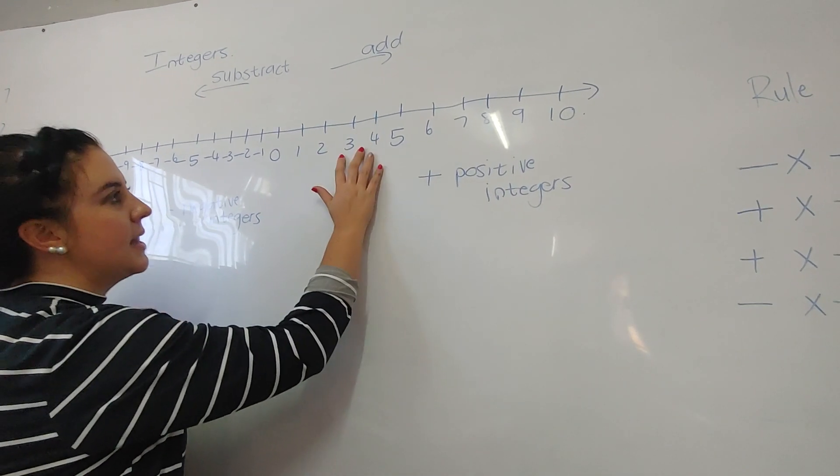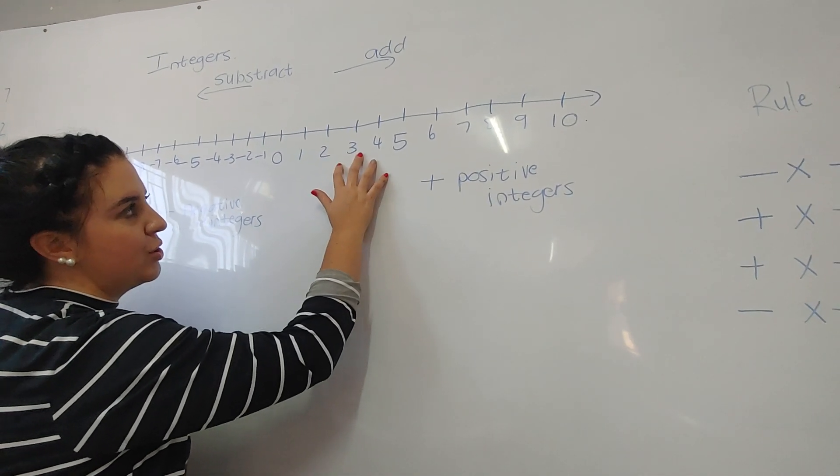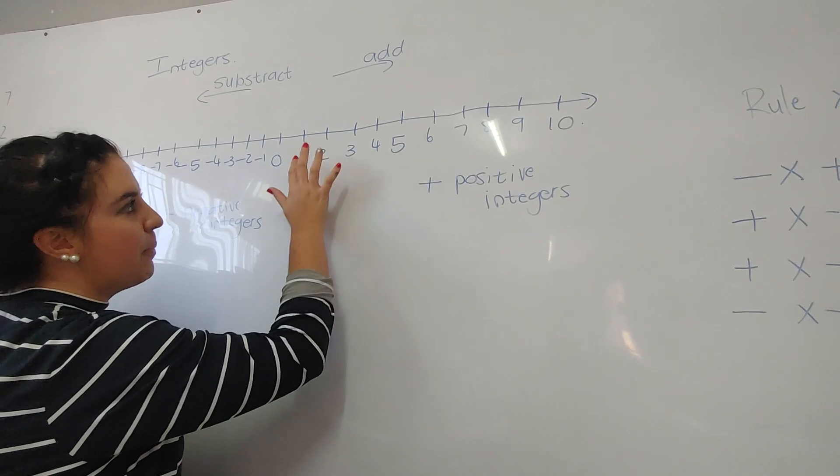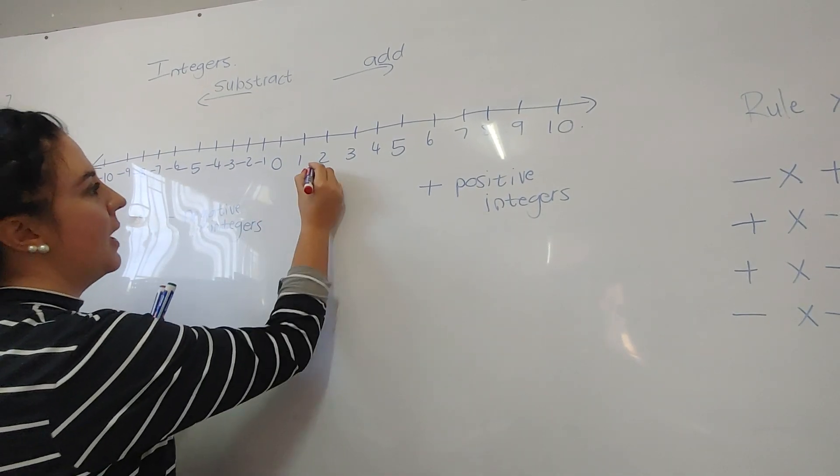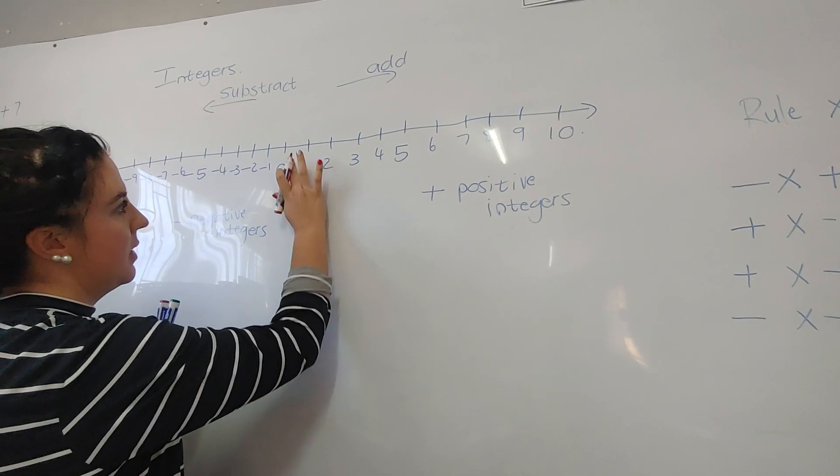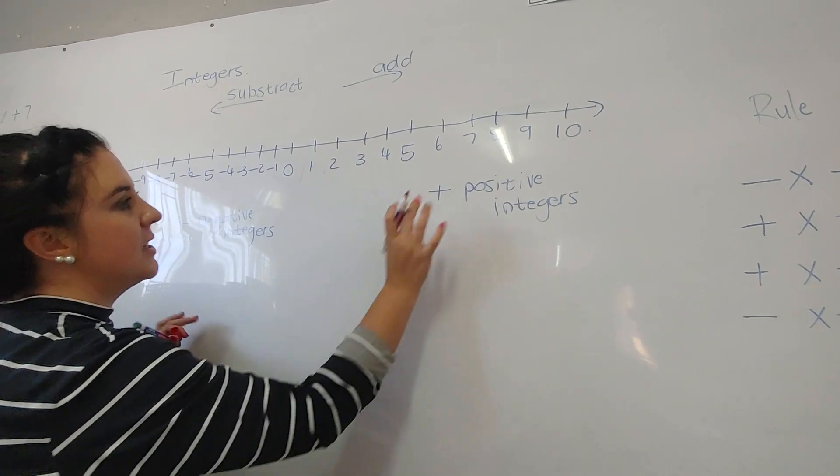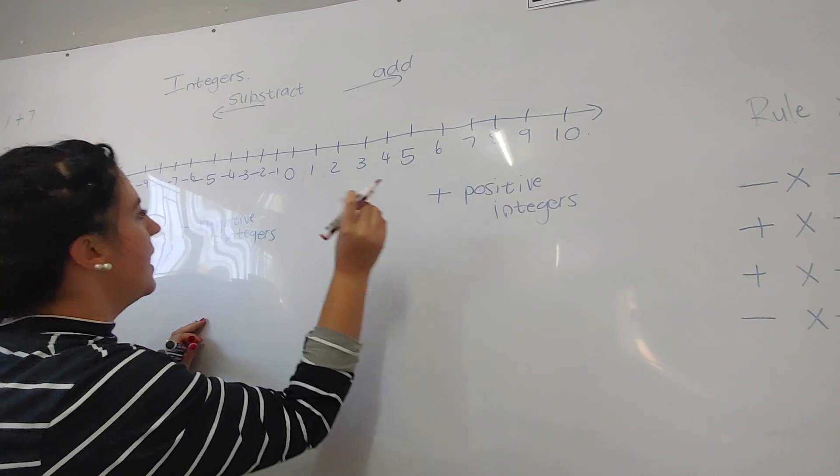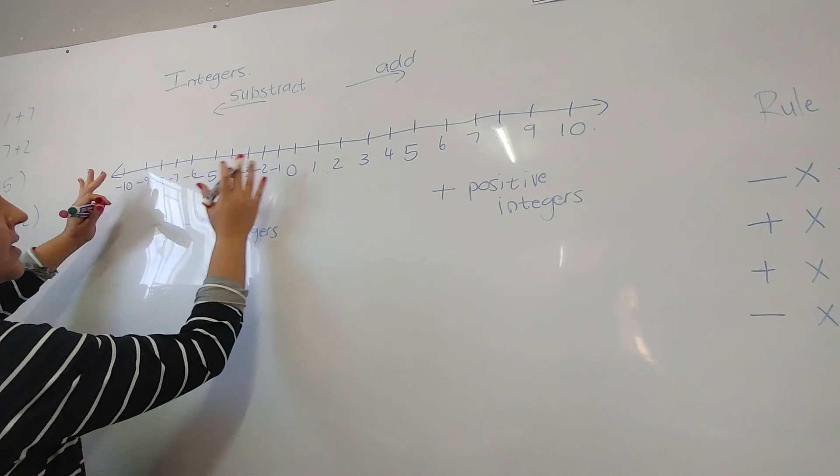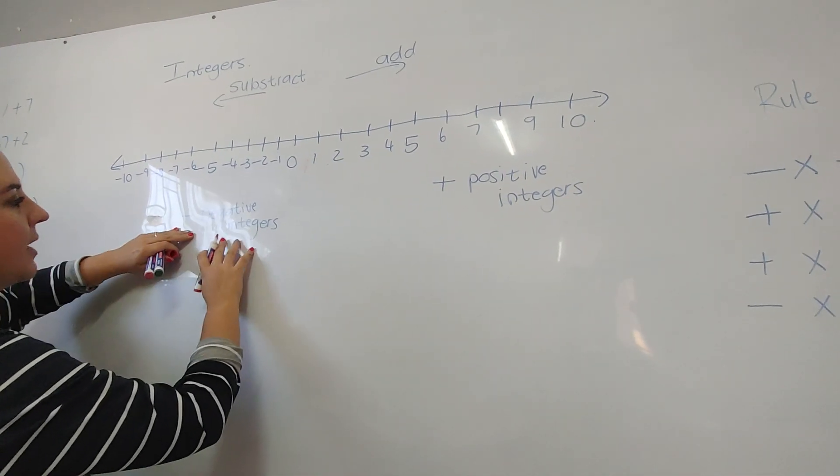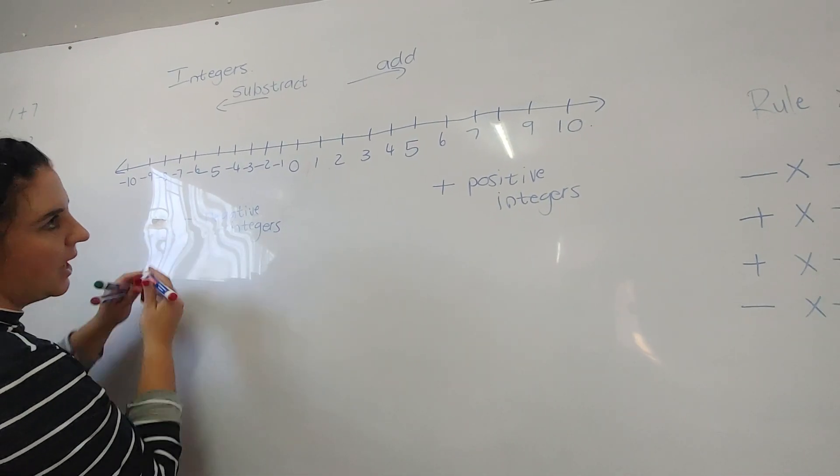Very important to remember that the numbers that we usually are used to, the whole numbers, are plus. You can basically just say plus two, plus one on this side, but we don't write it. So this is the positive integers, the positive numbers, and then the negative side of the number line is the negative integers. It's the minus numbers.